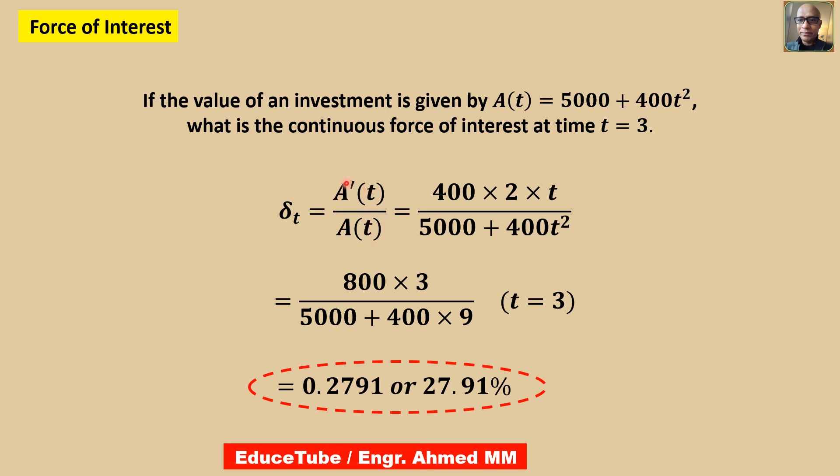This function and this is the derivative. If we do differentiation of this equation, we get this derivative. The bottom will be exactly the same. Now putting the value for t = 3, we easily find this. Using a calculator, we get 0.2791 or 27.91%. The continuous force of interest is 27.91%. It is very easy to calculate using this formula.